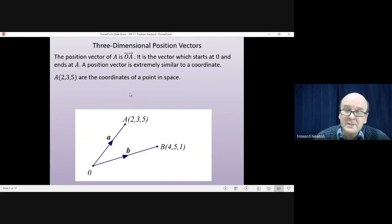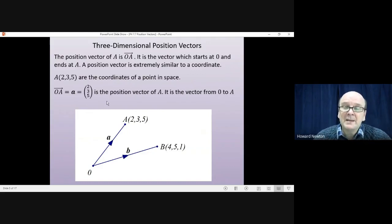The position vector OA or A is 2, 3, 5 as a column vector. And it really just tells you how you would get to A from the origin. But the concept of a coordinate, the concept of a position vector, they are extraordinarily similar.